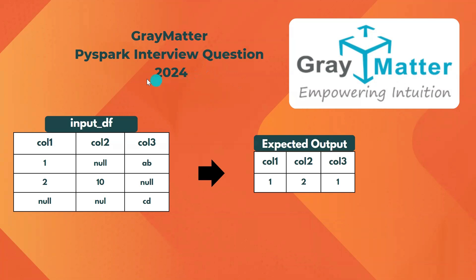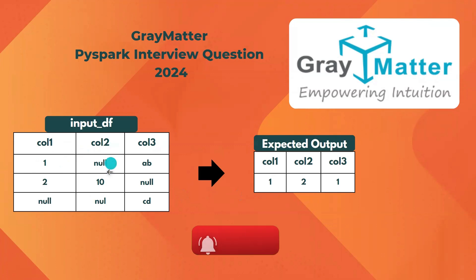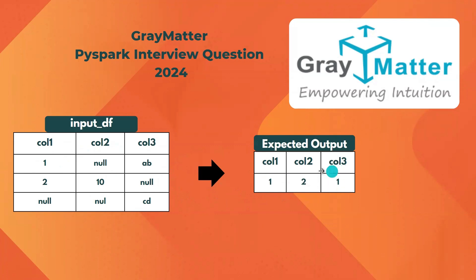Hello everyone, welcome back to the channel. In this video I'll be covering a PySpark interview question recently asked in a Gray Matter interview. Given an input dataframe with column one, column two, and column three, we need to find the null count in each column. Column one has one null, column two has two nulls, and column three has one null. Wherever we have nulls, we need to get the null count for each column.